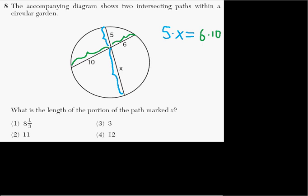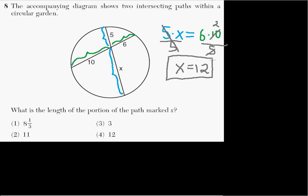So all I have to do is divide by 5 on both sides. Dividing by 5 cancels that, and that turns into a 2. So X equals 6 times 2, and X equals 12. The key thing to keep in mind is that 5 times X equals 6 times 10.